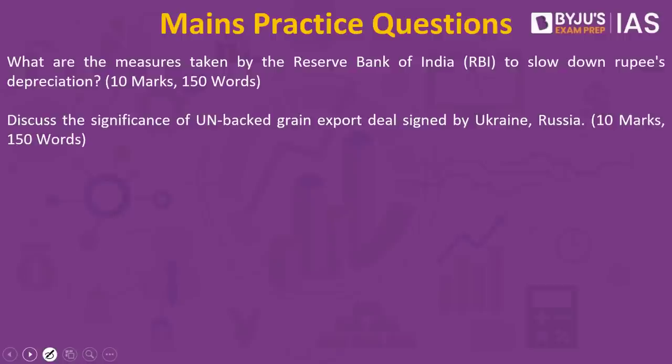Now for the mains practice questions: First, what are the measures taken by the Reserve Bank of India to slow down rupee depreciation? Second, discuss the significance of the UN-backed grain export deal signed by Ukraine and Russia. Please write your answers in the comment section for peer review and give positive feedback to your friends' answers. That's it for today — thank you for watching, all the best.